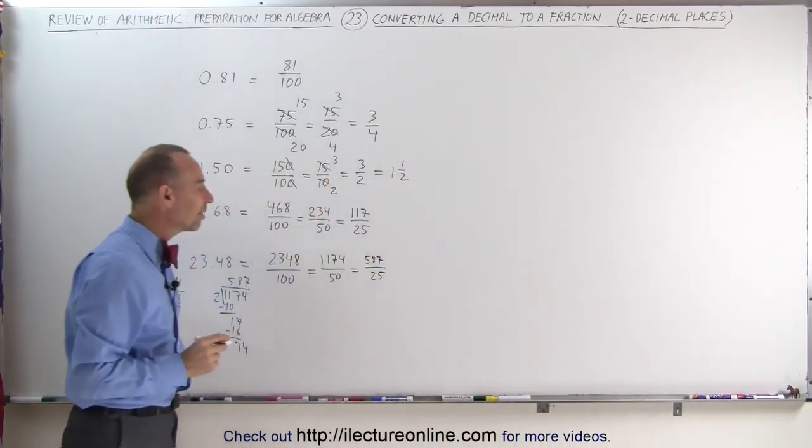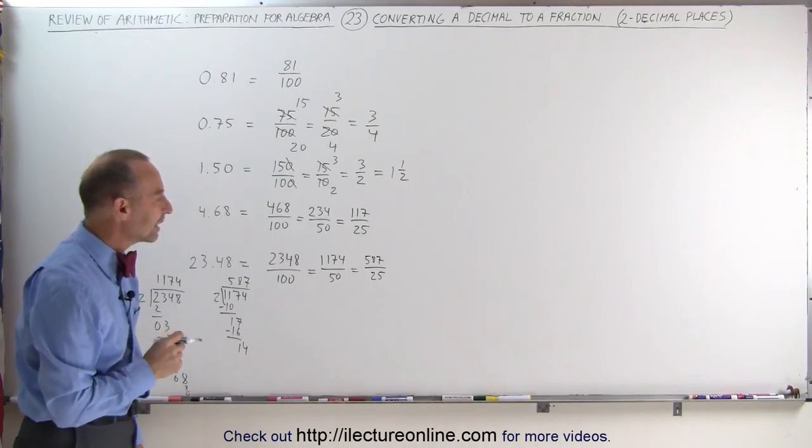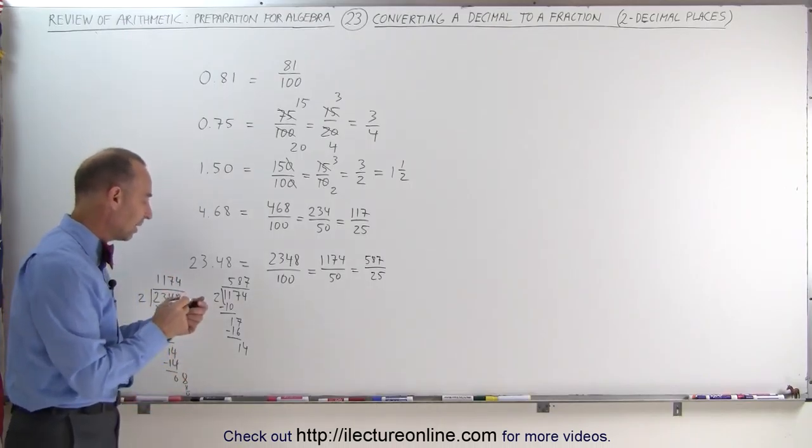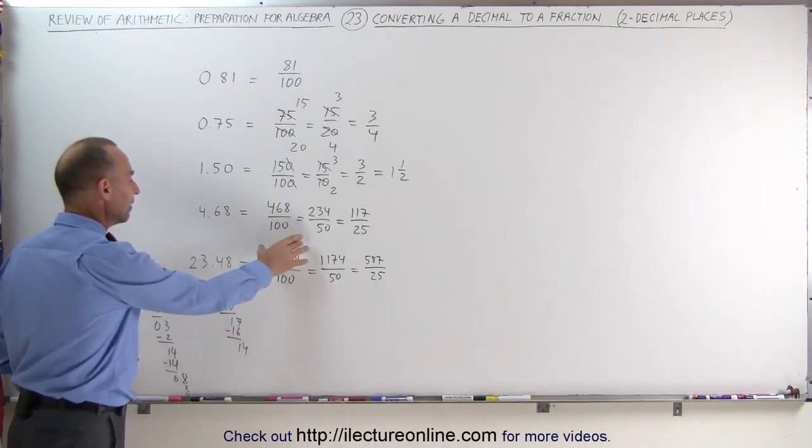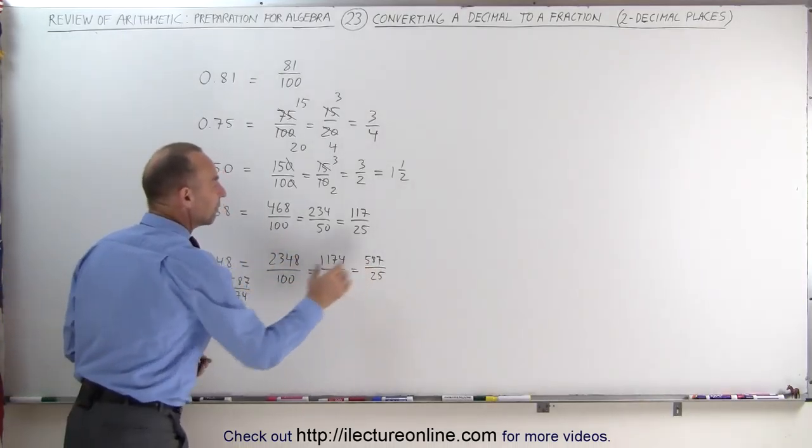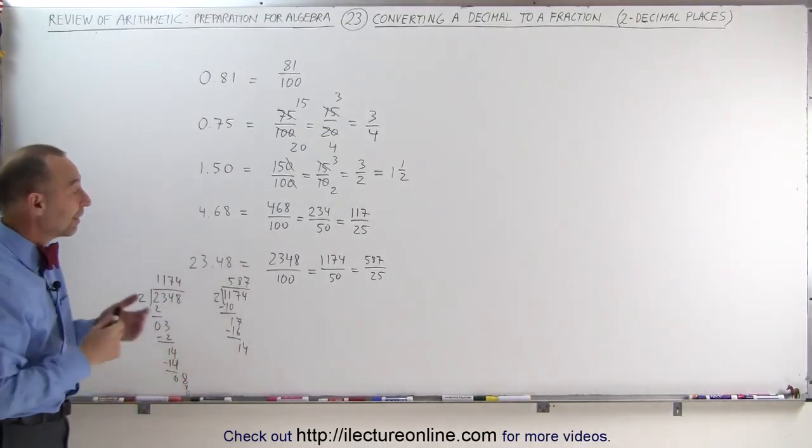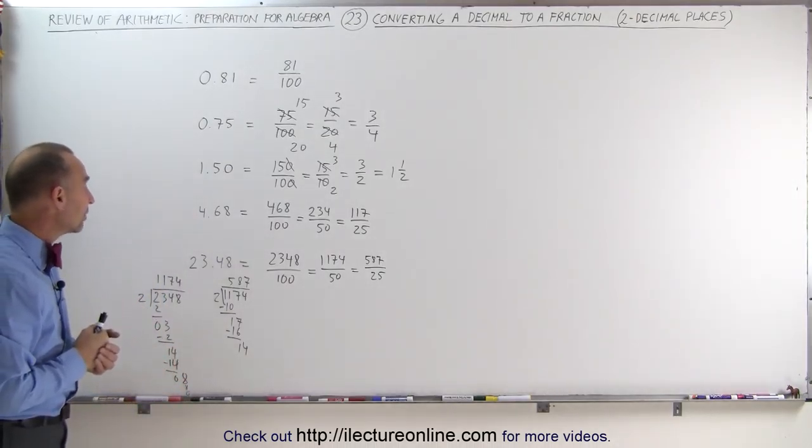And that's probably as simple as we can go. Let me quickly check. Yes, it is. I don't think we can simplify that anymore. And so 23.48 can be written as a fraction first and then simplified to 587 divided by 25.